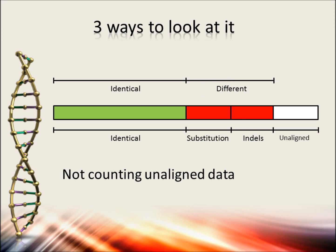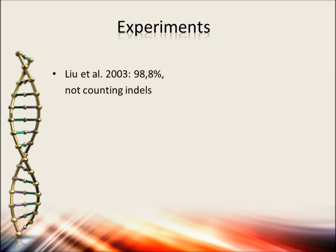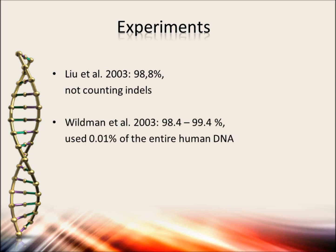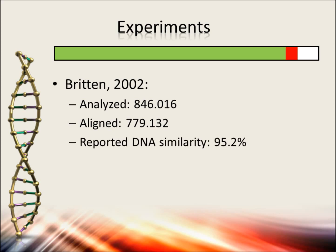The second way includes the indels. The third way is to count the letters in the entire code. Here is a list of scientists who have reported very high percentages of similarity. The first did not include indels; the others only analyzed a very small section of the genome. Britain in 2002 analyzed 846,000 base pairs, managed to align almost 780,000 of them, and reported a DNA similarity of 95.2%. But this means 8% unalignable data had been removed first.